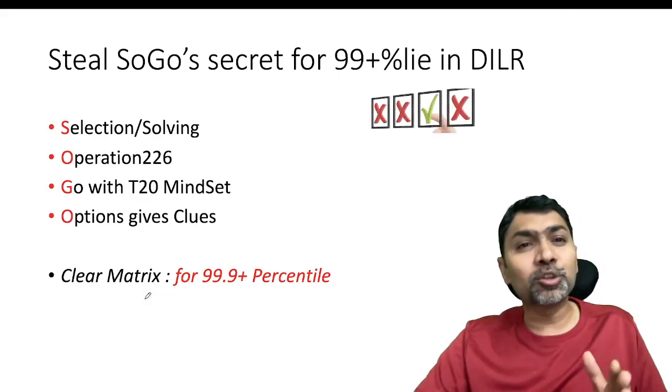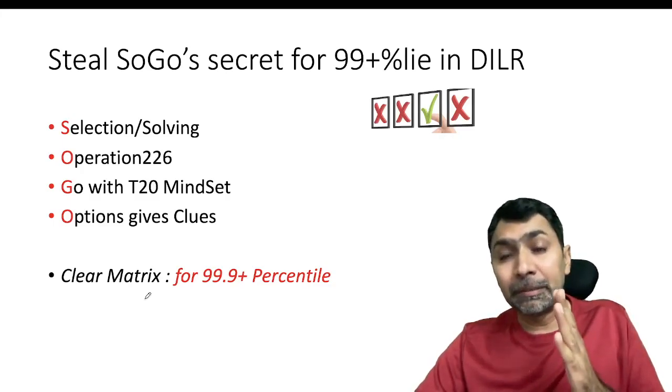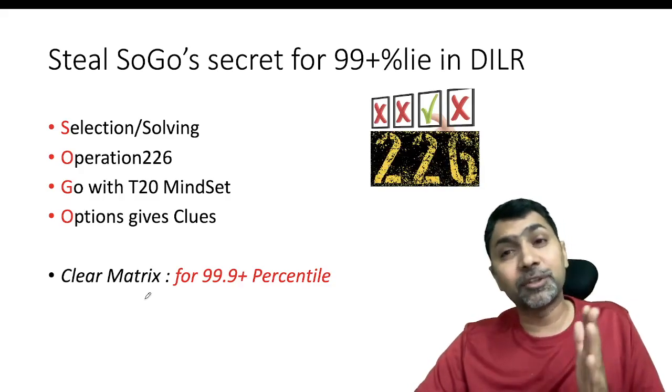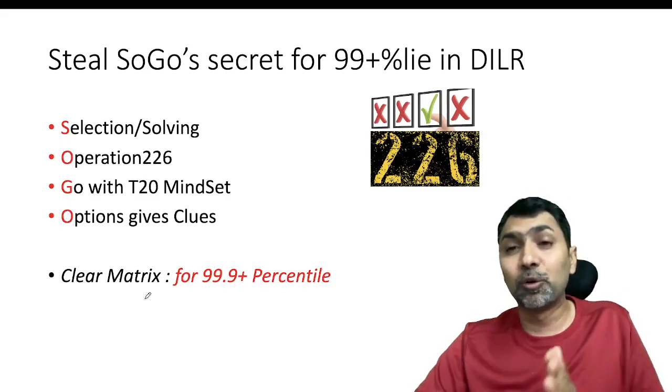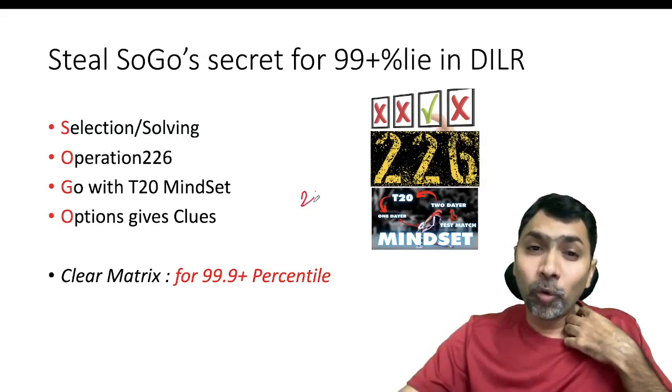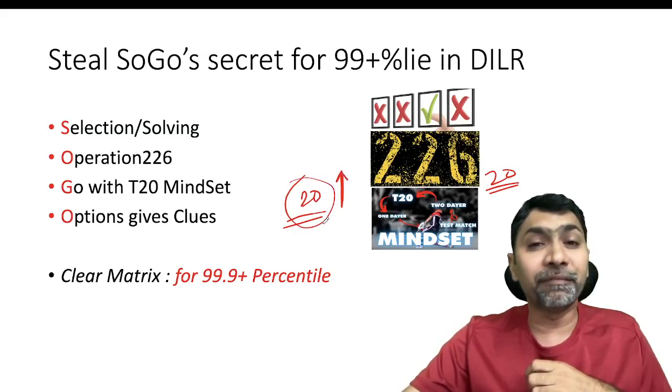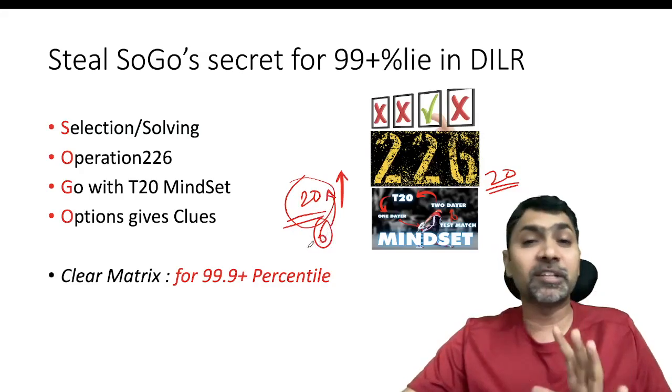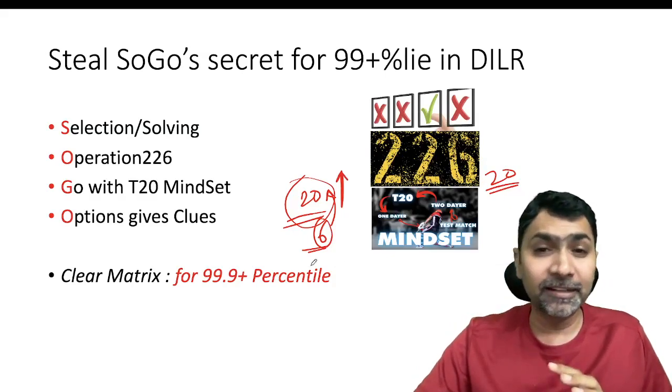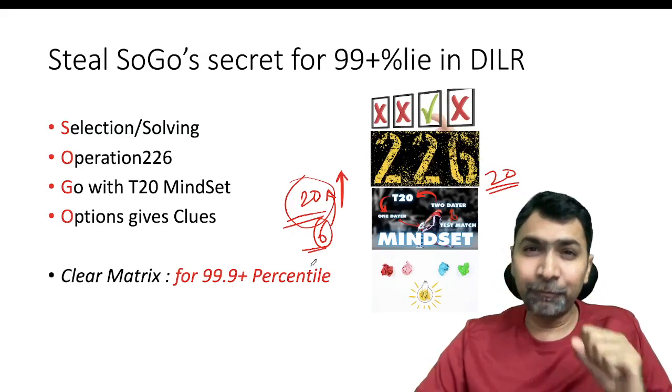To summarize: first thing you need to do is select the right set before solving. Second thing is Operation 2-2-6: don't go beyond 10 minutes—you can do it at the end, but the first two sets you should not go beyond 10 minutes. Next, go with a T20 mindset: first 20 minutes and last 20 minutes, go separate. You should never try to do the first six-question set in the first 20 minutes. And the last thing is options are there to give you some clues.